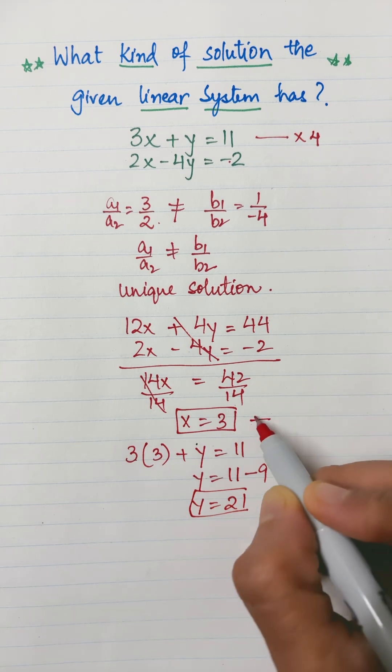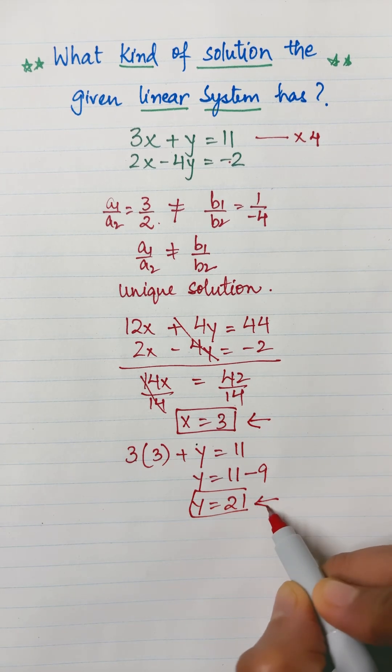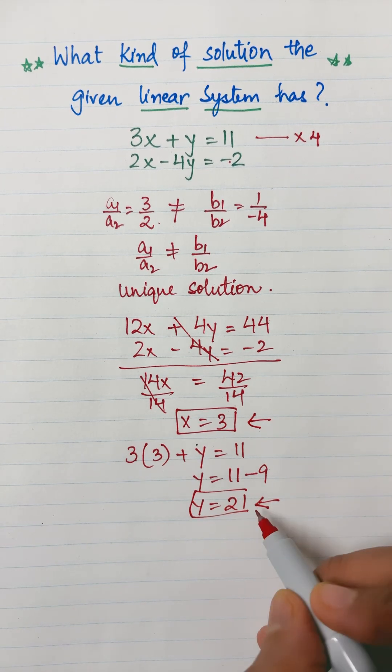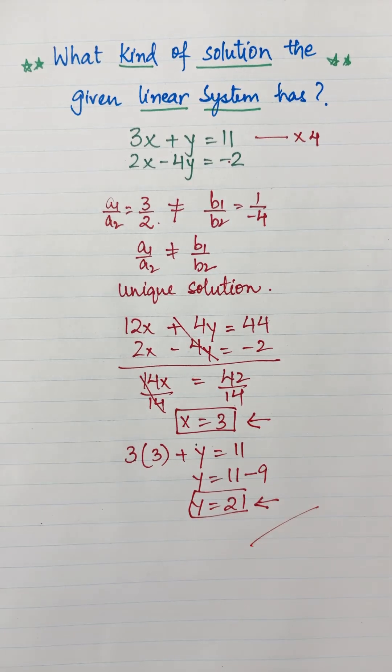Therefore, x equals 3 and y equals 2 is the unique, or exactly one, solution of this given linear system. That's all.